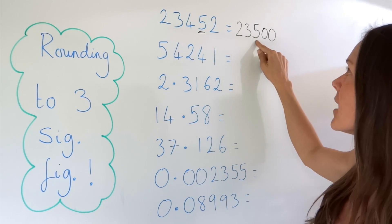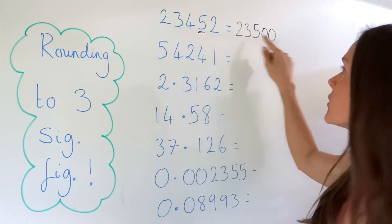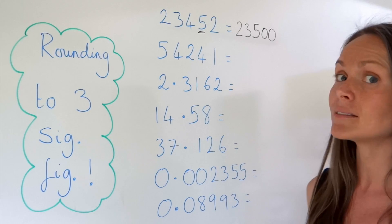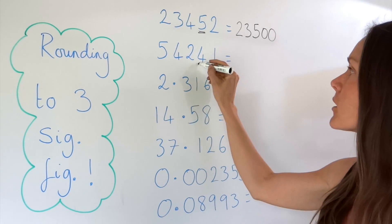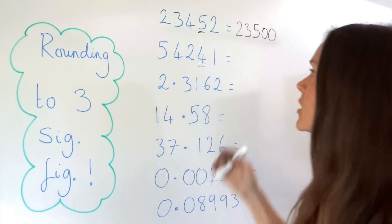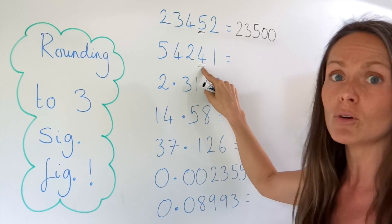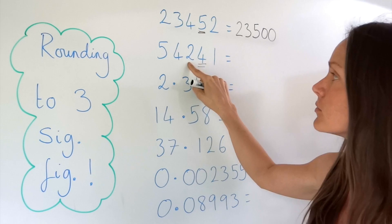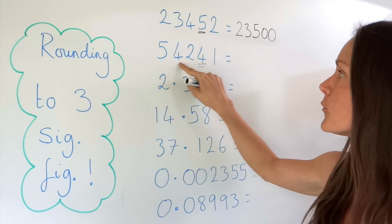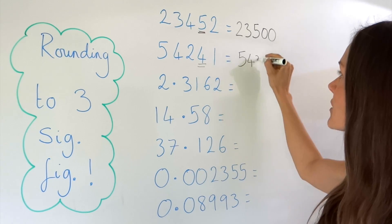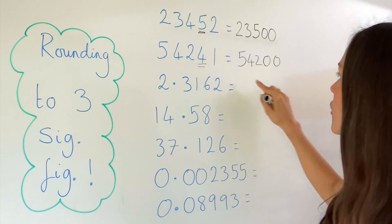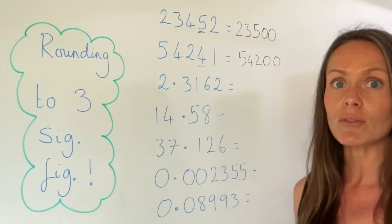So now I have rounded the number to three significant figures — I've got three figures here and these two numbers turn into zeros. Let's look at the second one. If I'm rounding to three significant figures, I have to check the fourth one to see if it rounds the third one up. This time, because the number is smaller than five, it doesn't round this number up, so this one stays as it is. So we've got five, four, two — but just like before, these two numbers turn into zeros. So now I've got one, two, three significant figures.